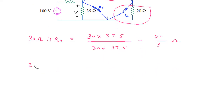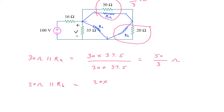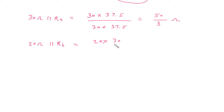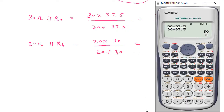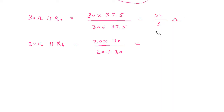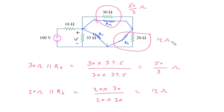Then 20 Ohm is in parallel with Rb. So 20 parallel with Rb (30 Ohm): 20×30 divided by (20+30) equals 12 Ohm.